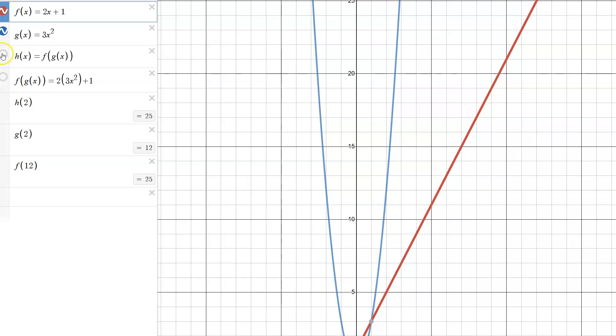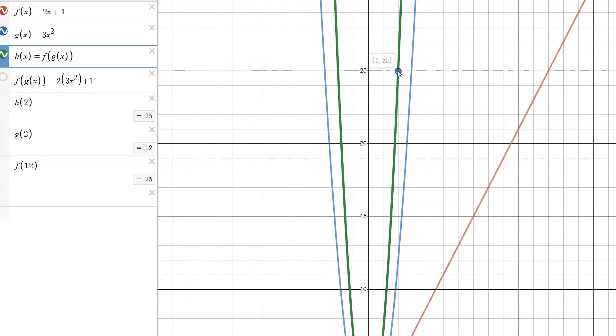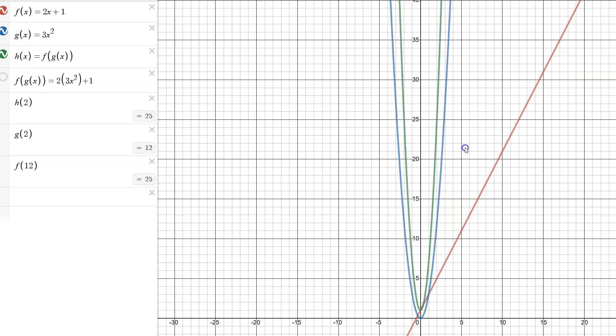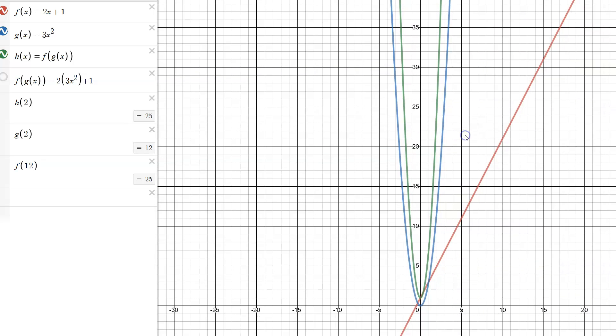If I turn on the graph of h and turn this into green, what do we see? H of 2 is 25. Its curve, which looks like a ramped up parabola, is really taking into account both functions chained together, g inside of f.